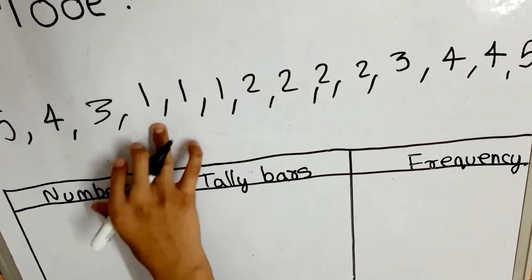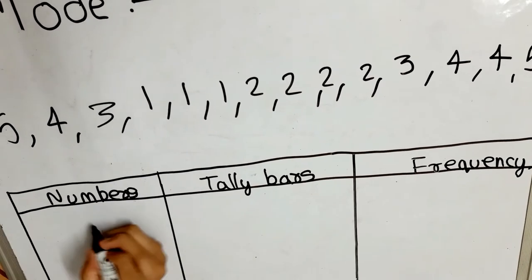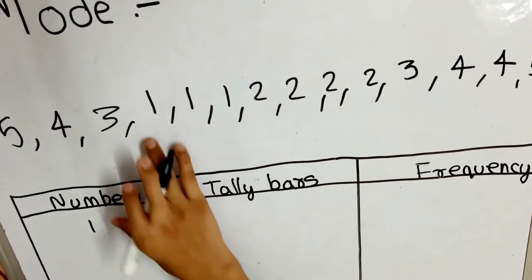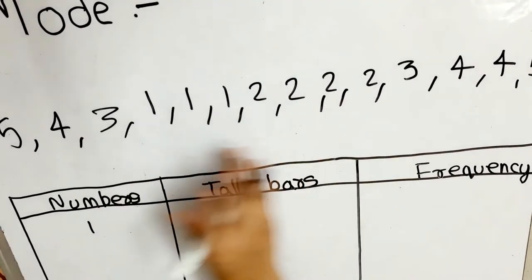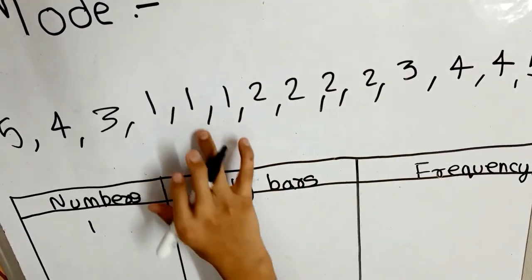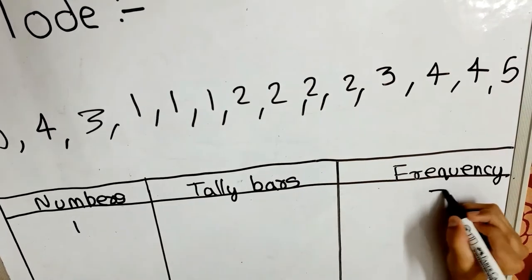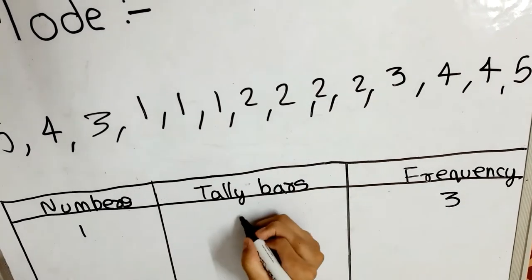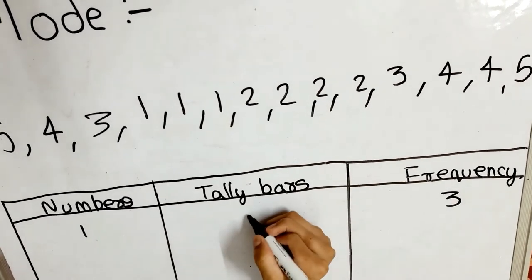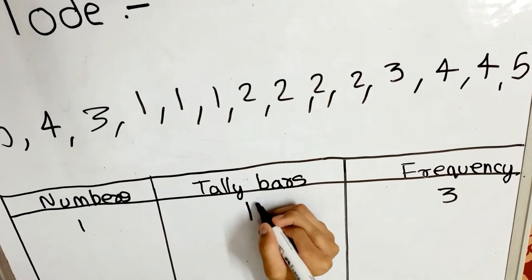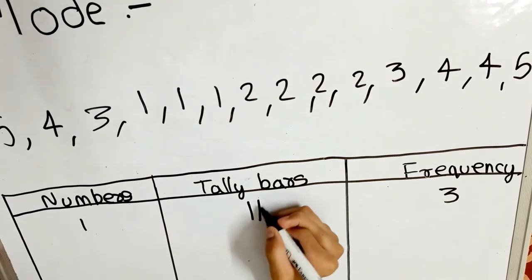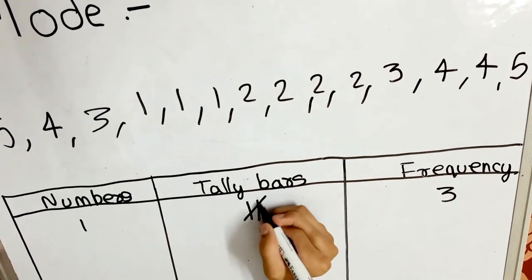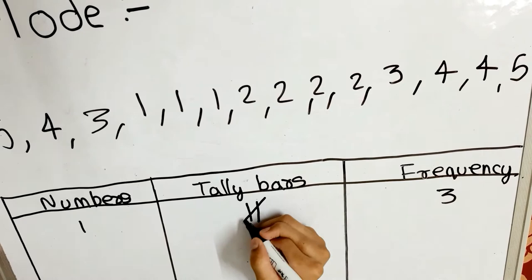Our first number is 1 — just write 1, find its frequency, which is 3, then draw the tally bars: 1, 2, and 3.